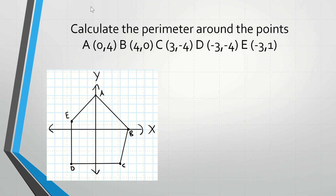Okay, so here what we're going to do is calculate the perimeter around these points. We have five points A, B, C, D, and E. I've already plotted them here and made a pentagon that goes around these points. The perimeter is just the distance that goes around all these points. You'll notice that some sides are slanted, but segment ED is completely vertical and segment DC is horizontal, so we can figure out those two right off the bat.